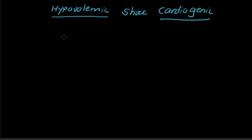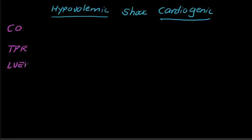There are three types of shock. In this video I will talk about hypovolemic and cardiogenic shock; in the next video we'll talk about septic shock. First, there are four parameters: cardiac output, total peripheral resistance, left ventricular end-diastolic pressure, and mixed venous oxygen content. For each parameter you have to know whether it is decreased or increased and the exact mechanism behind that.